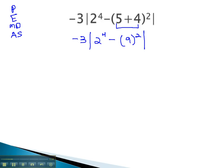Still inside the absolute value, we can work on our exponents next, working down the order of operations, giving us negative 3 times the absolute value of 2 to the 4th. Remember that's 2 times 2 times 2 times 2, which comes out to be 16, minus 9 squared, which is 81.